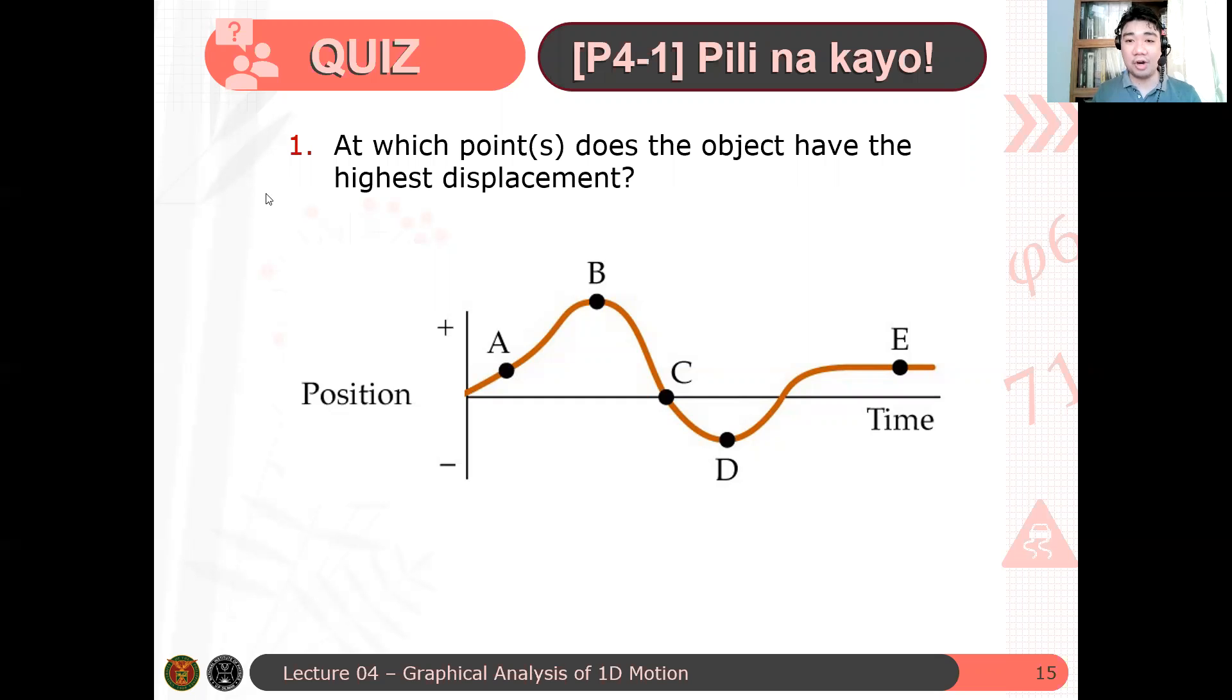So this is 4-1 of your, I'm having a naming system when we go, this is the first problem for the fourth lecture. At which point or points does the object have the highest displacement? Pili-pili lang. So use your pen and paper. Kung gusto yung i-chat direct message, pwede naman. So given this particular curve, at which point or points does the object have the highest displacement?